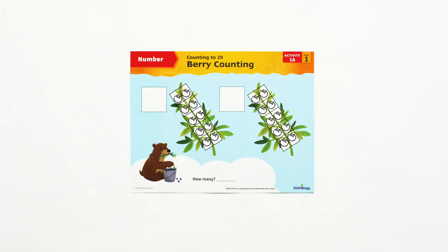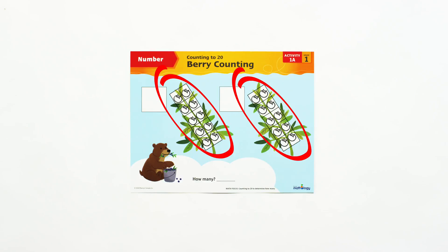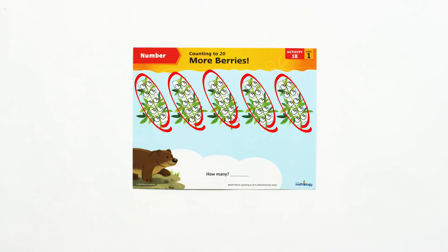And certainly last but not least, the student cards. These cards are often double-sided to support differentiation. In this particular example, students using side A can count to 20. The card's extension encourages use of side B for those students who are ready to count to 50. The teacher cards are designed as full lessons.